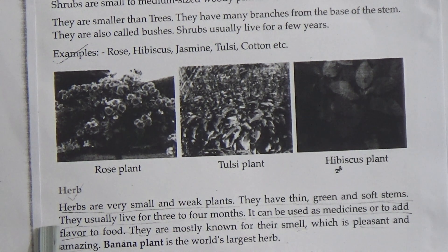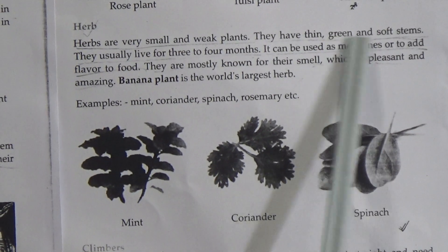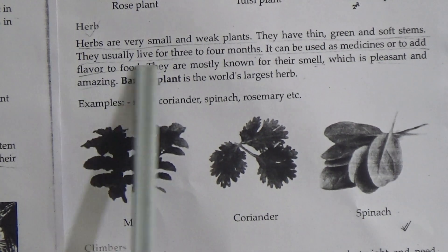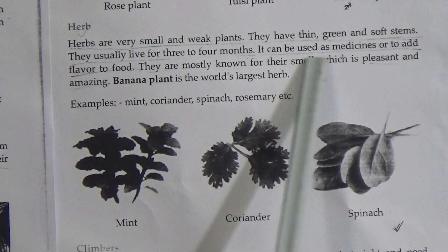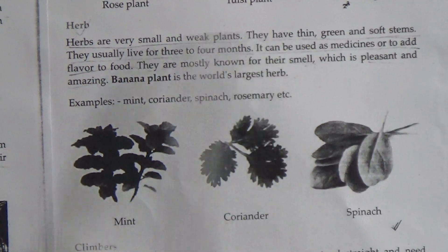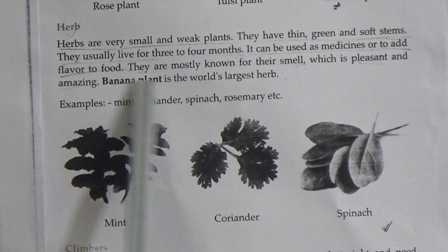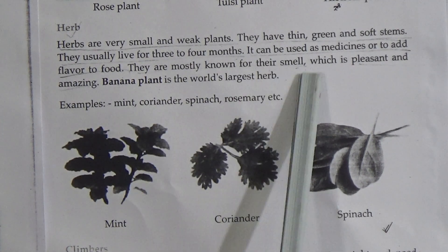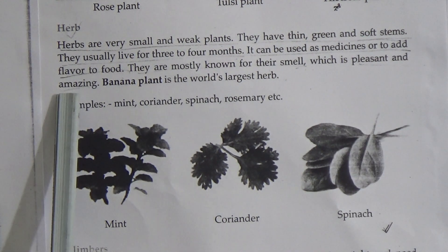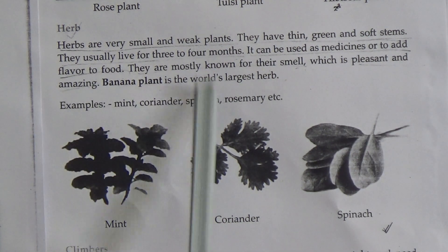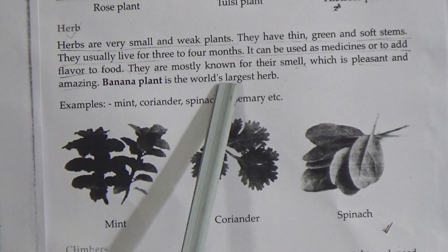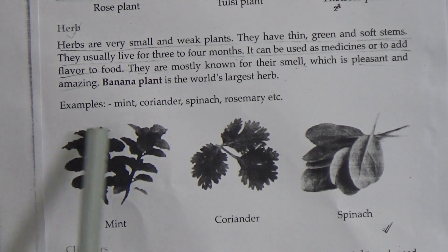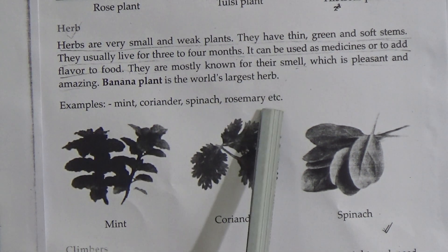Next is herbs. Herbs are very small and weak plants. They have thin, green, and soft stems. They usually live for three to four months. They can be used as medicines or to add flavor to food. They are mostly known for their smell, which is pleasant and amazing. The banana plant is the world's largest herb. Examples: mint, coriander, spinach, rosemary, etc.